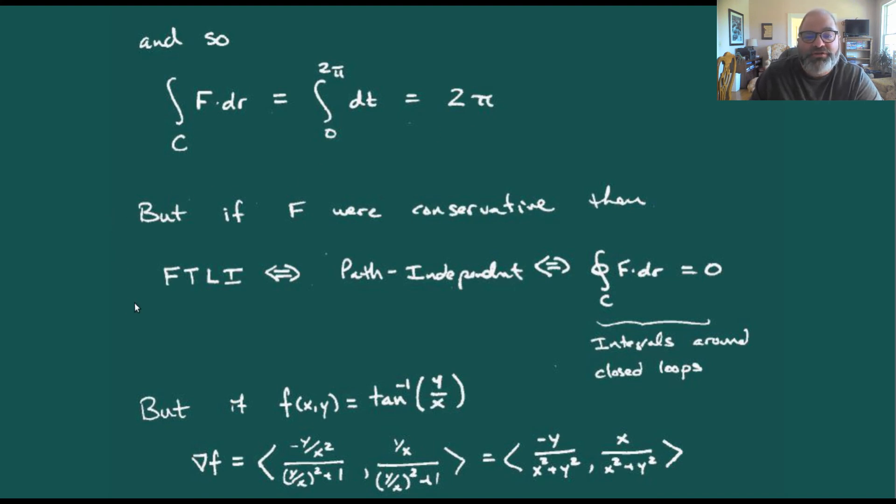Now if F were going to be conservative, then the fundamental theorem of line integrals, which is the same thing as path independence, is equivalent to saying that if we do an integral over a loop, we better get zero out of that. So this seems to be going all right, but now here's another thing in the mix.